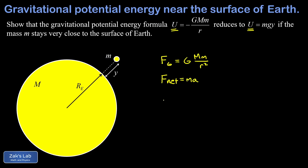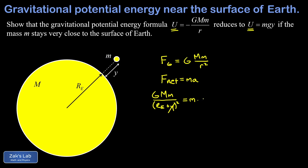We release this mass from rest and apply Newton's second law: F net equals ma. The net force on little m is given by Newton's law of gravitation, G times both masses divided by the separation distance squared. That separation distance is the radius of the earth plus the height y, all squared. Since the mass stays very close to the surface, y is negligible and we can drop it. On the right side, the little m's cancel, and we get little g equals big G times the mass of the planet divided by the radius of the planet squared.